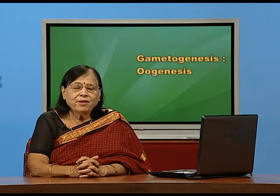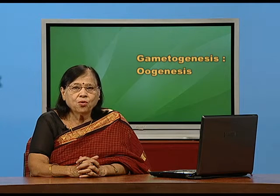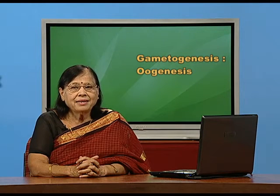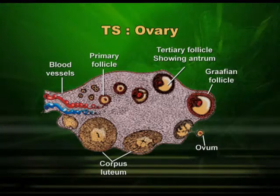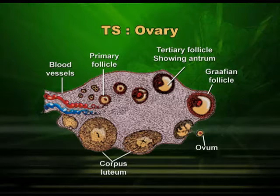In female, when gamete is formed which we call ova, then it is oogenesis. To describe oogenesis in a proper way, it is required to show you this diagram of layers of ovary. You can see the follicles and now I will concentrate on the Graafian follicle.